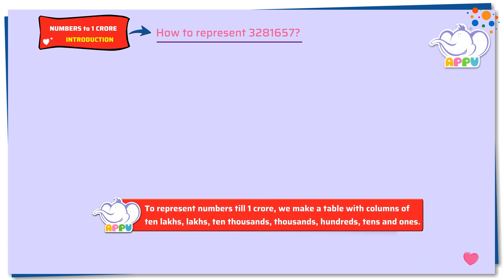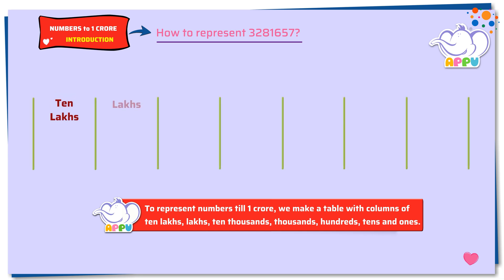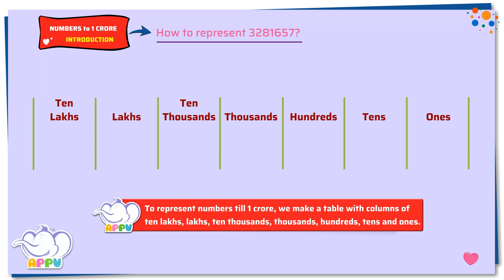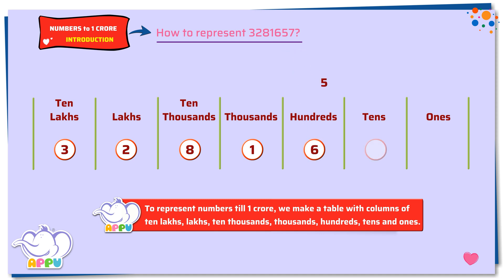To represent a seven-digit number, we make a table of 10 lakhs, lakhs, 10 thousands, thousands, hundreds, tens, and ones. So, 3281657 can be represented as three ten lakhs, two lakhs, eight ten thousands, one thousands, six hundreds, five tens, and seven ones.